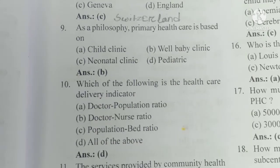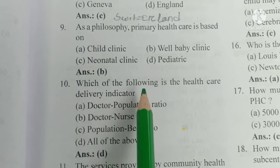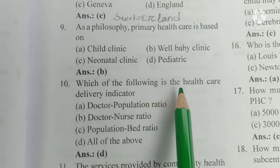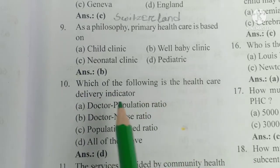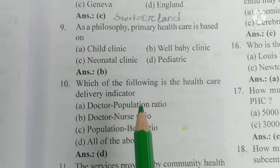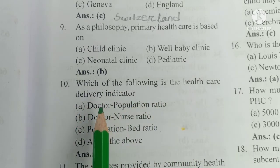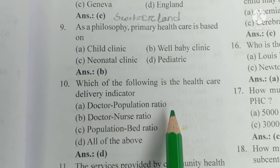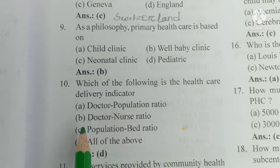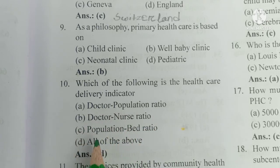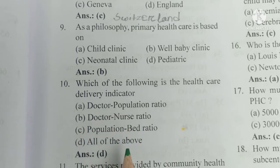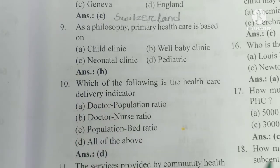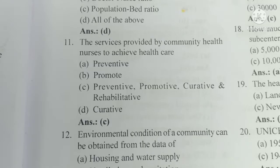Question number 10. Which of the following is the health care delivery indicator? A) Doctor-population ratio, B) doctor-population ratio, C) population-bed ratio, D) all of the above. The answer is D, all of the above.